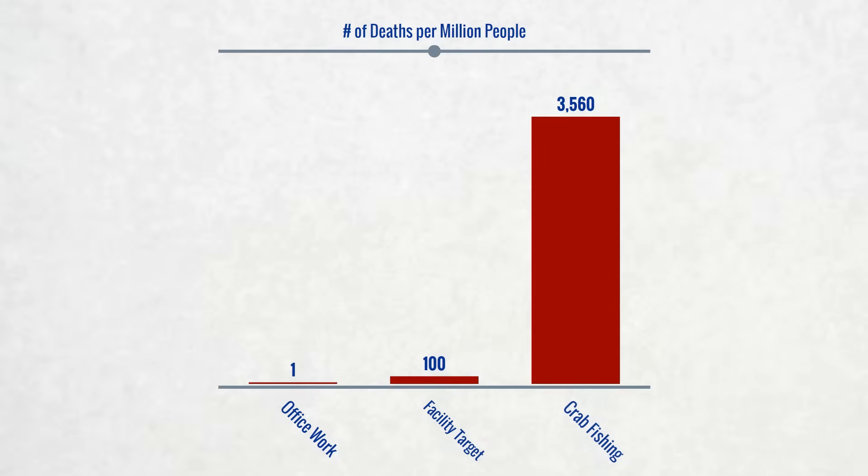Let's think about how to strike the right balance. A facility does not need to be as safe as working in a high-rise office. On the other hand, it should not be as dangerous as Alaska king crab fishing, the highest risk occupation in North America.